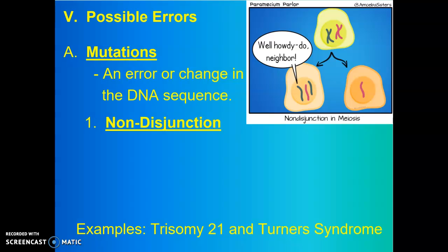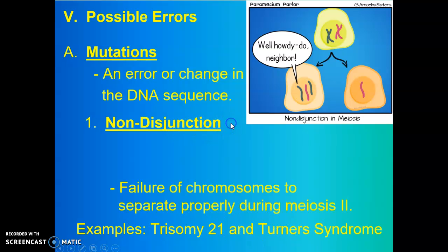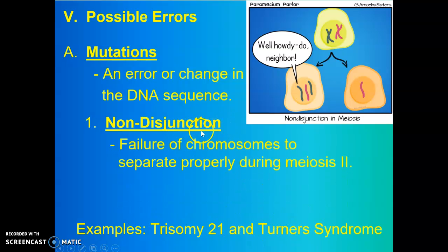So when we discuss a chromosomal mutation, we're going to use a vocab term called non-disjunction. This is in reference to a mutation, but it's going to be on a more grand scale — more on the chromosomal scale. Non-disjunction refers to the failure of chromosomes to separate properly during meiosis II in particular.